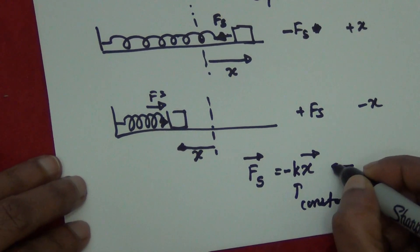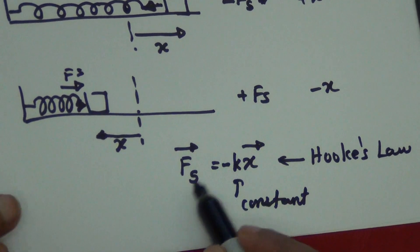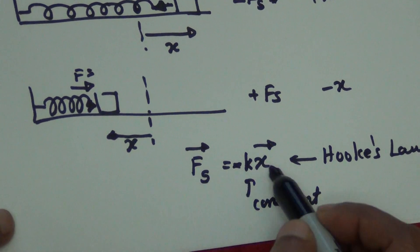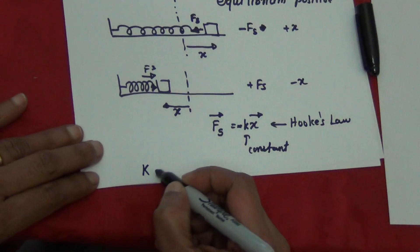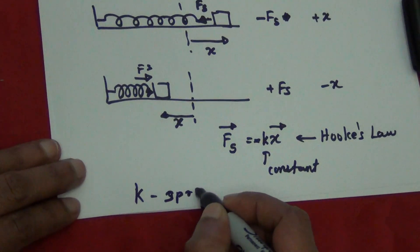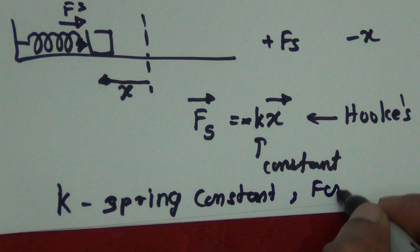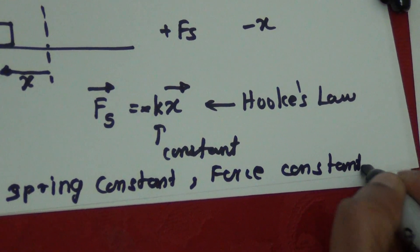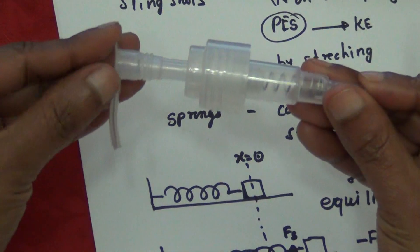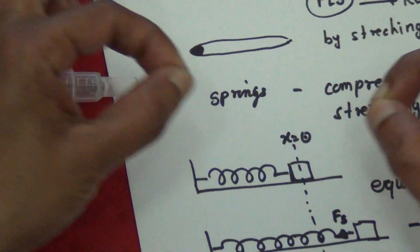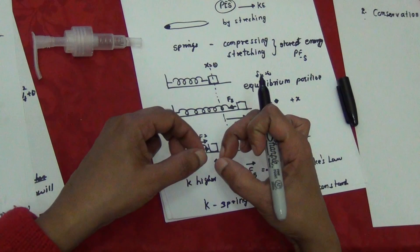This is called Hooke's Law. The negative sign means x and the spring force are always in opposite directions. The k is called the spring constant, or sometimes force constant. In some springs you can compress them easily; in others it is very hard to compress or stretch. That means the k is higher for springs which are very hard to stretch.